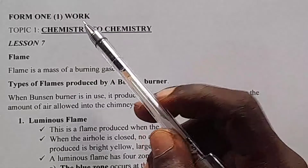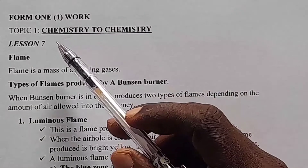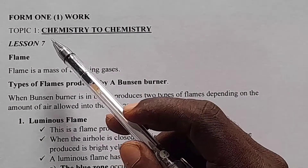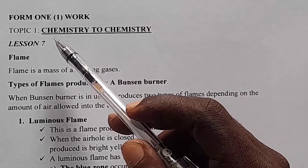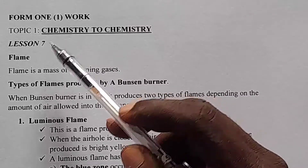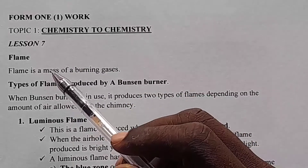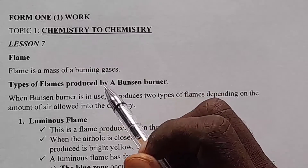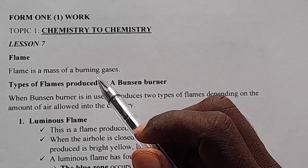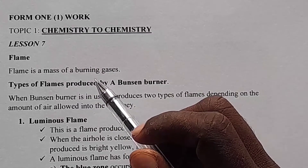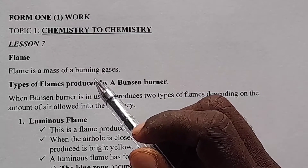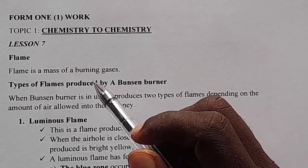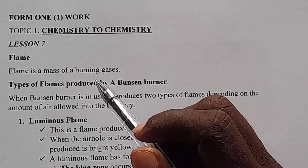Hello students. In Form 1 previously, in Lesson 6, we were dealing with the sources of heat. We said the pieces of apparatus used as a source of heat include the Bunsen burner, and we were talking mainly on the Bunsen burner — its parts and the function of the different parts of the Bunsen burner.